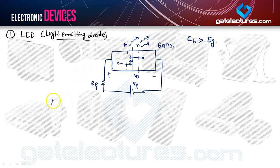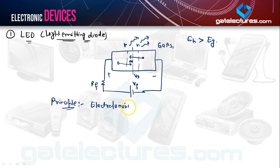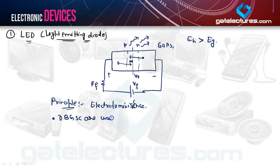The principle on which your LED works is known as electroluminescence. Remember that direct bandgap semiconductors (DBGSC) are used for that — for example, gallium arsenide, gallium phosphide, and gallium arsenide phosphide, which are the compound-type semiconductors.